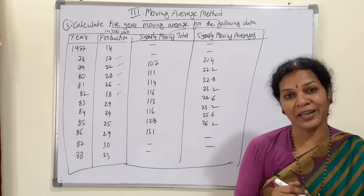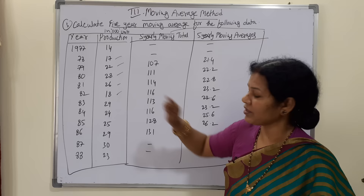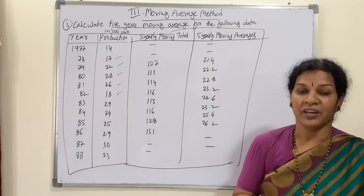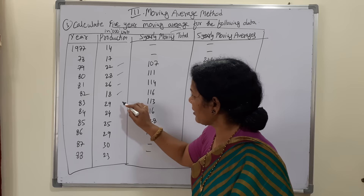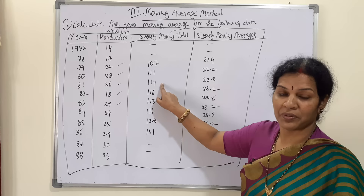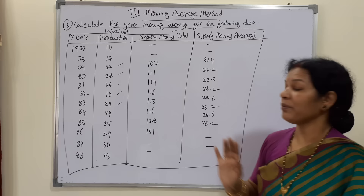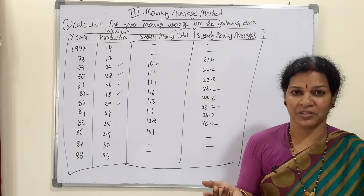Next, leaving one year and moving to the second year onwards — second, third, fourth, fifth, sixth year — these five we total up and we get 111. We write 111 opposite to the middle, which is 28. In the same way, the next five years total to 114, and we write that opposite to its middle value.